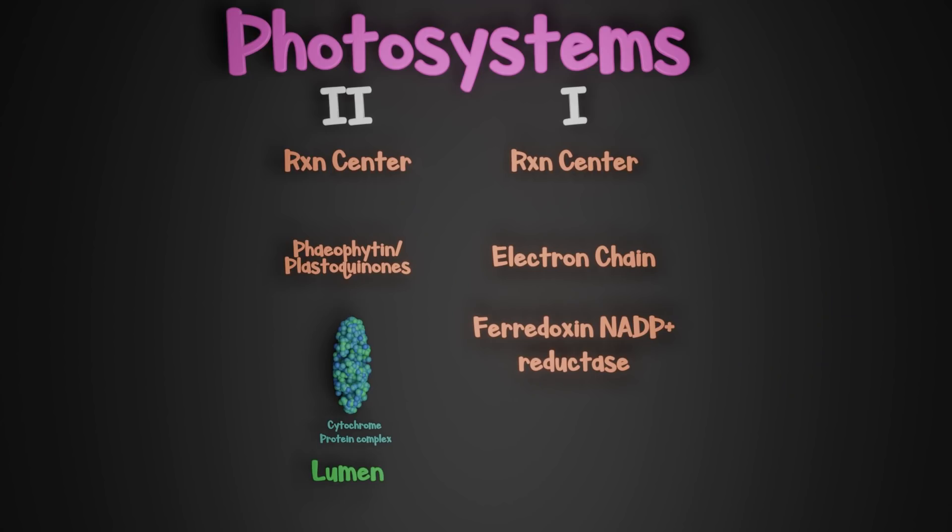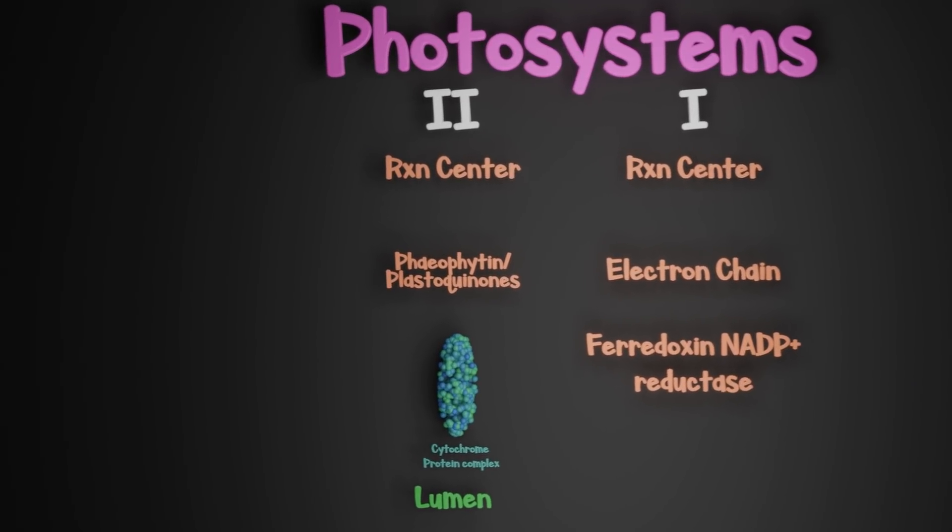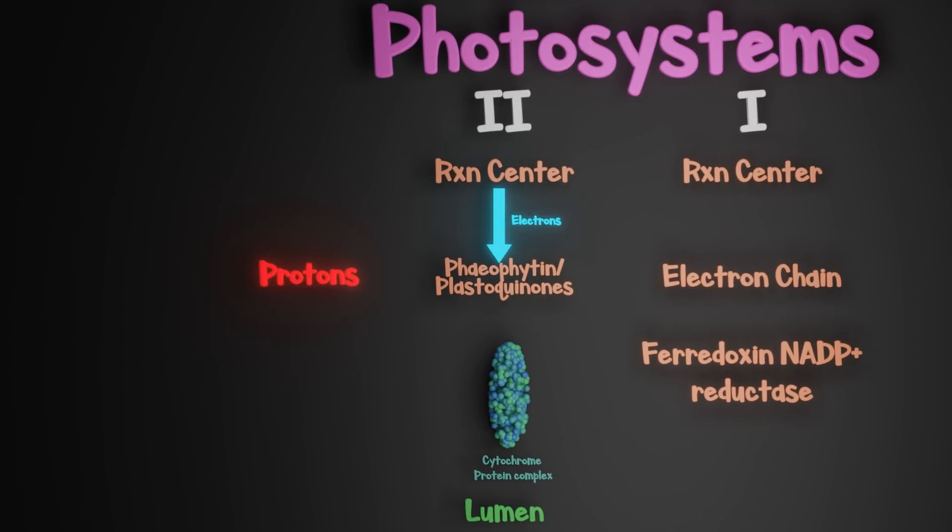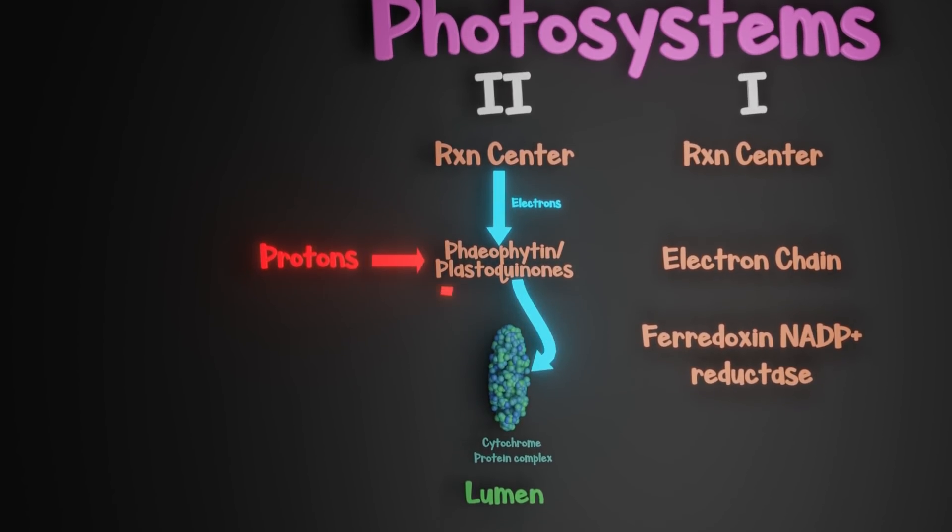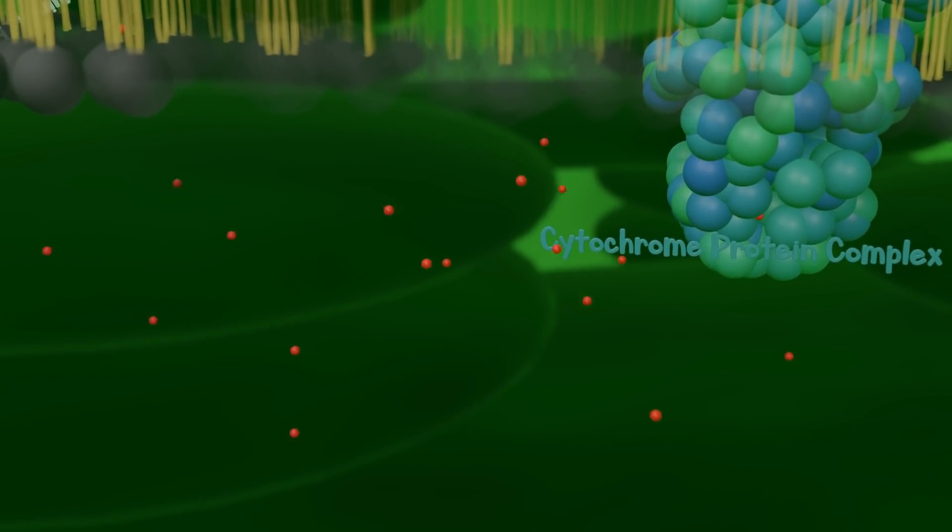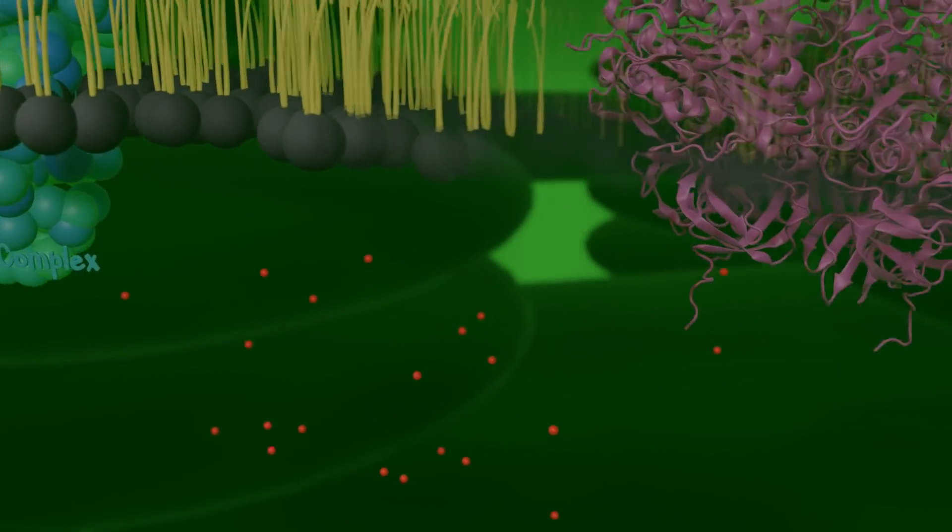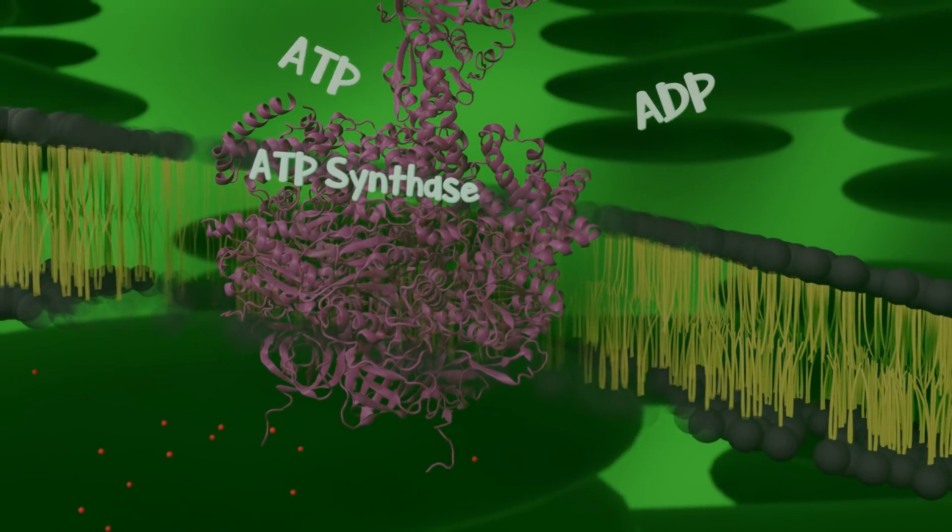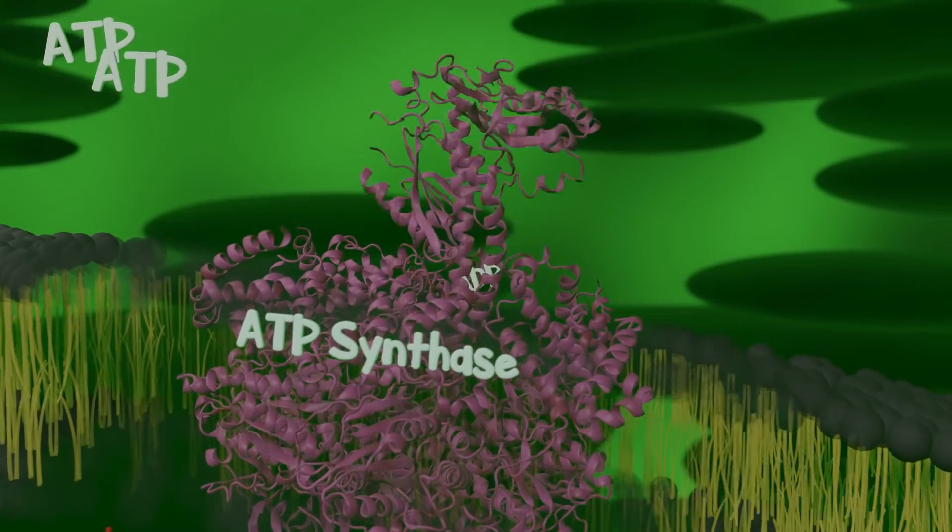What I've described is the process of photosystem II. It serves principally to bring protons from outside of the thylakoid into the interior. As this concentration of protons builds up, they are funneled through ATP synthase. As they pass through this protein, it spins, and this kinetic motion is used to synthesize ATP.